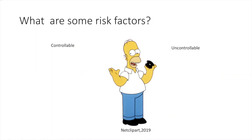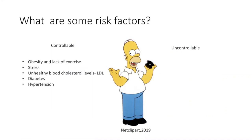We know his risk factors because of his lifestyle. He is obese, overweight, and he lacks exercise. He has stress due to Bart Simpson always upsetting him, hurting Lisa, annoying his mother, Homer Simpson, and everybody else in the family. With Homer Simpson's lifestyle, he will have unhealthy blood cholesterol levels — LDL. He will have diabetes in the future as well as hypertension.